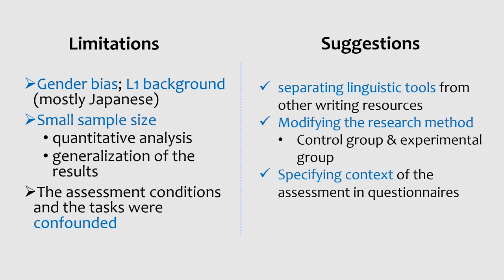On top of that, several suggestions can be proposed. In the future study, researchers can separate linguistic tools from other writing resources and compare different performance when using different types of tools. Besides, modifying the research method to have a control group and an experimental group could better avoid the confounding situation. Finally, it's better to specify the context of the writing assessment in the questionnaires, because students may have different attributes towards writing resources depending on the different purposes of the writing assessment.